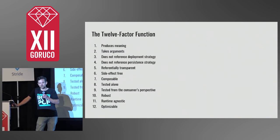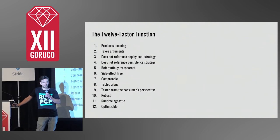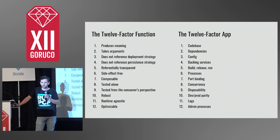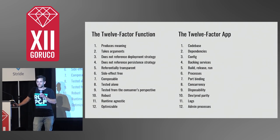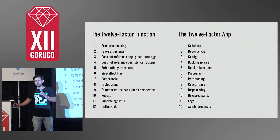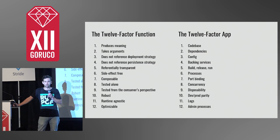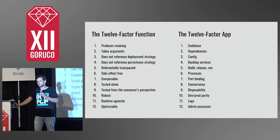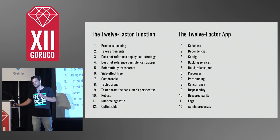12-factor functions aren't supposed to be fancy, they're supposed to be meaningful and portable. While there's no one-to-one correlation, the 12-factor function has the same goal and the same approach as the 12-factor app: move faster by separating the core of your business from the rest of the stack.